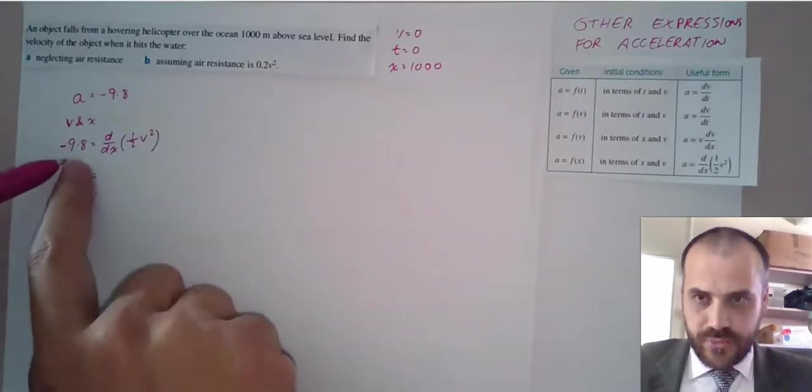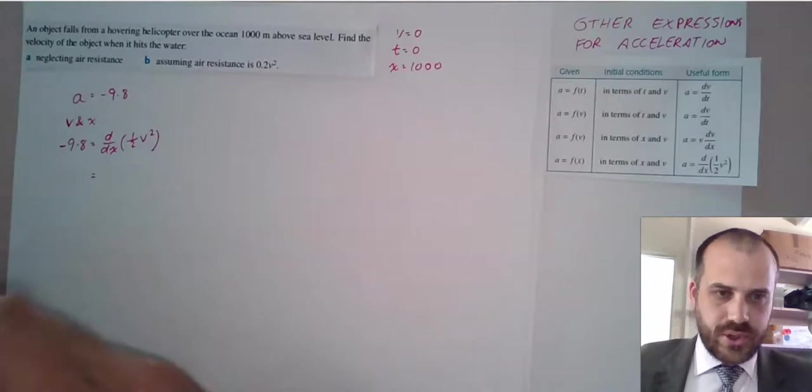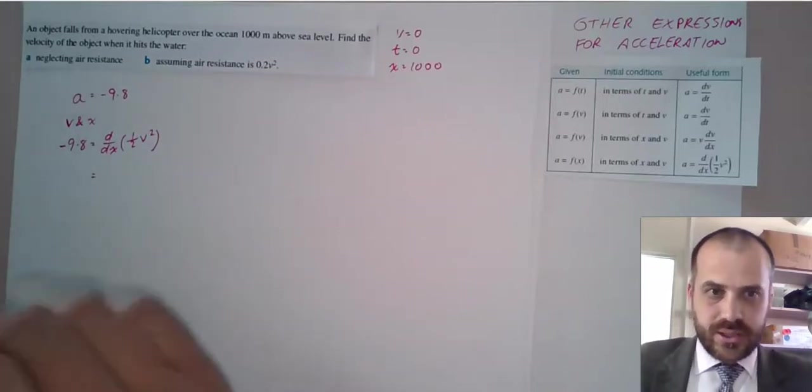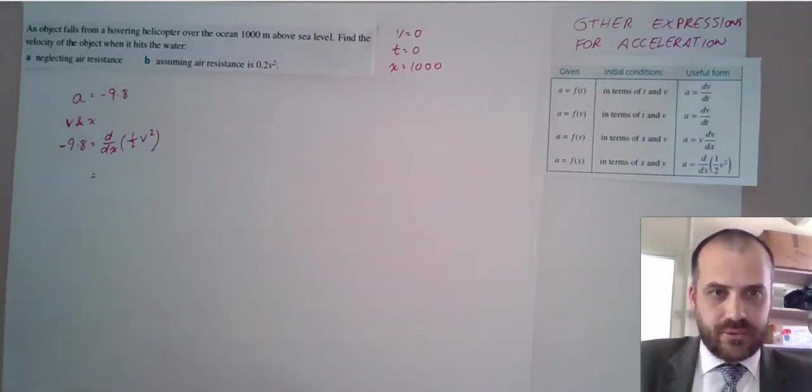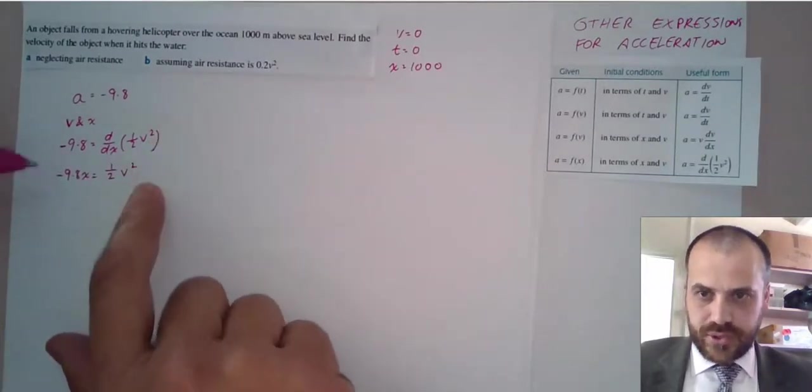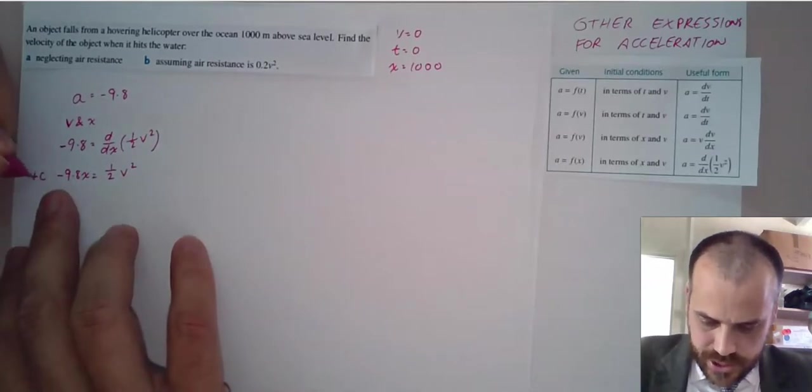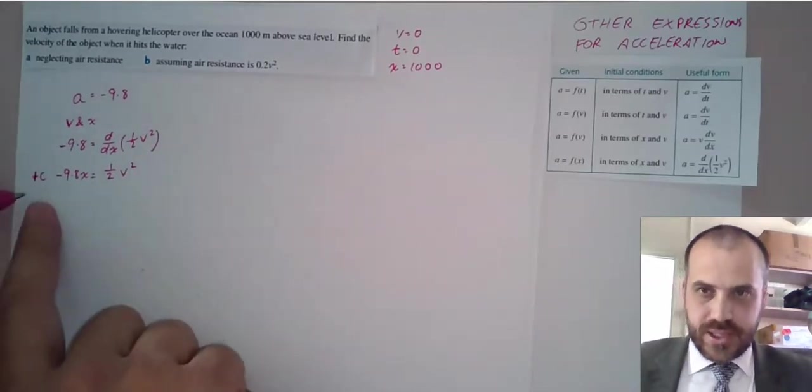So now that we know that negative 9.8 can equal this, we can integrate both sides to get a relation without that derivative there. So I've integrated both sides from this step to this step. I've just left out the integration bit, but I also just forgot my little plus C here. So we'd better add that in. Now, how are we going to find our plus C?